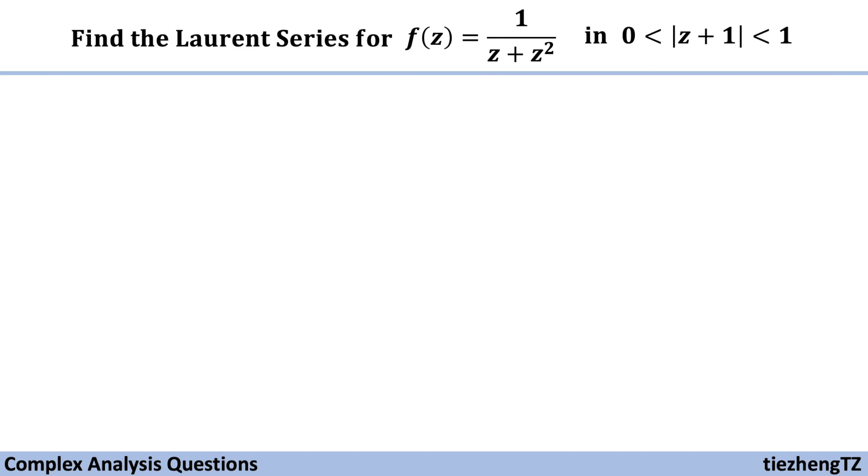Today's question is to find the Laurent series for this function, 1 over z plus z square, in the domain where the absolute value of z plus 1 is between 0 and 1.